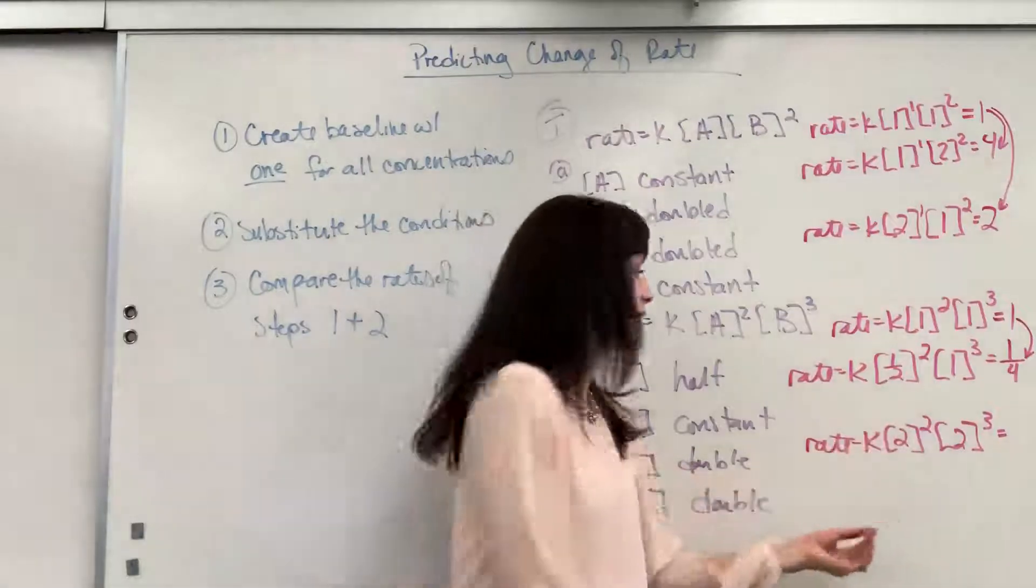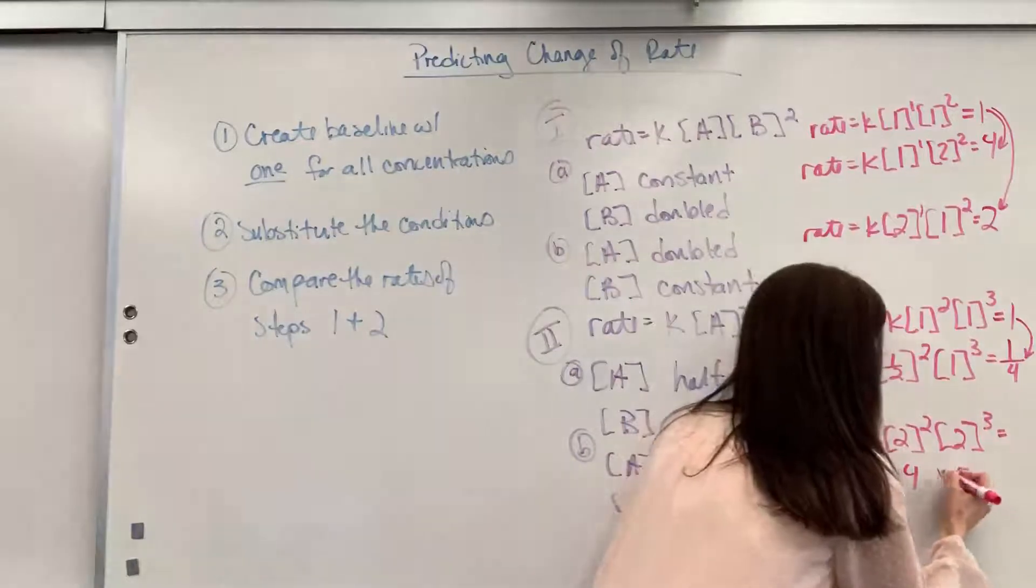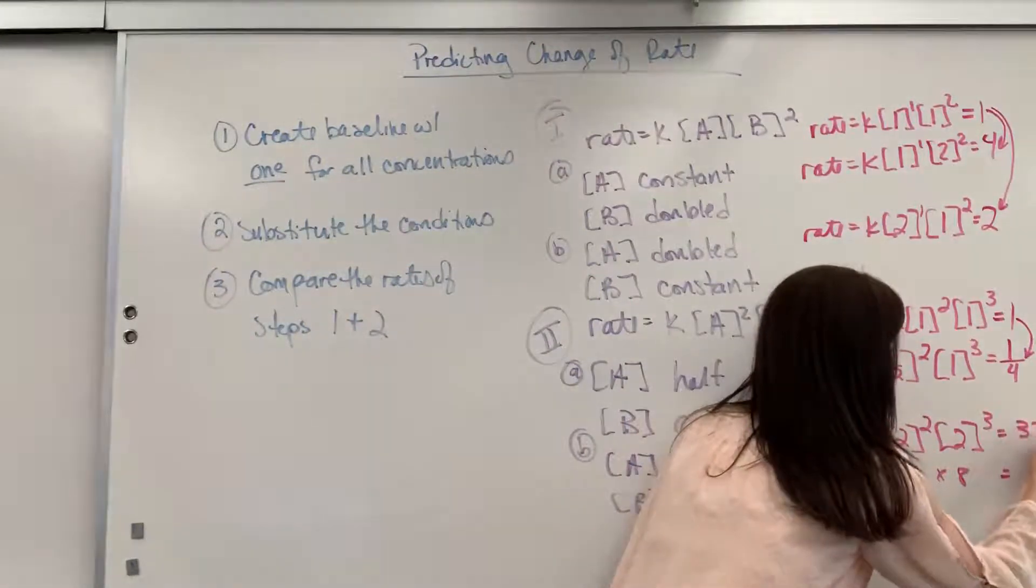Wow. So 2 times 2 is 4. And then we have 2 times 2 times 2 is 8. So that's going to give us 32.